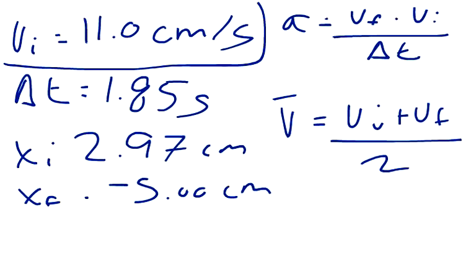But the average velocity can also be written as average velocity equals x final, the final location minus the initial location divided by the change in time.